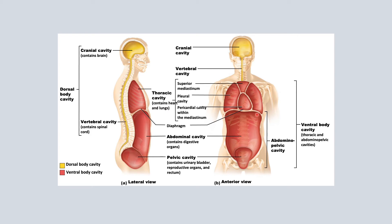A unique thing about the thoracic and the abdominal pelvic cavity is the diaphragm. This is how you can differentiate which part of the ventral body cavity is thoracic and which is abdominal — through the diaphragm. The diaphragm is the demarcation line we use to know whether we're in the thoracic area or the abdominal area.